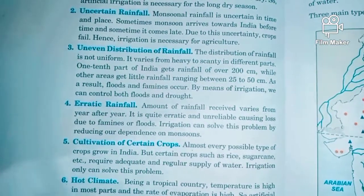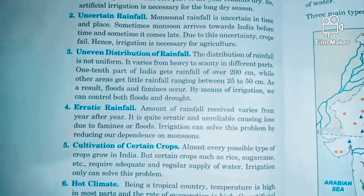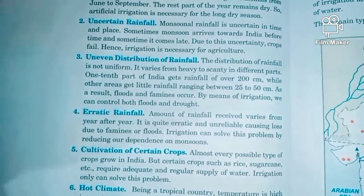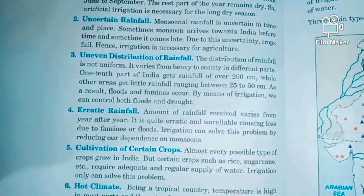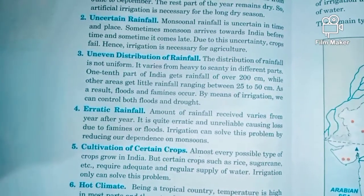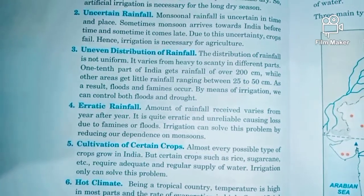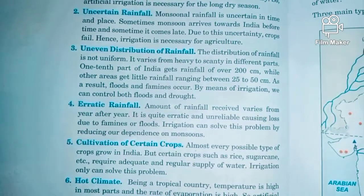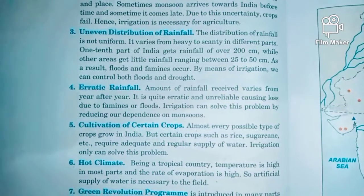The next reason is erratic rainfall. We know rainfall is expected from June to September, but it is not certain that it will occur every year. One year it will be very extensive, one year moderate, and one year it may not come at all. In 2005 and 2019 there were flood-like situations due to rainfall, but in some years it may not be available. This causes both floods and famines, so we need artificial channels to avoid being mostly dependent on monsoon.